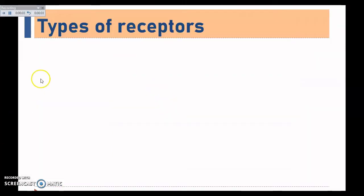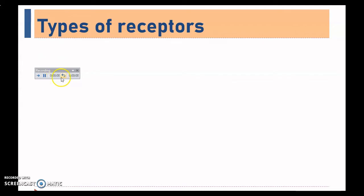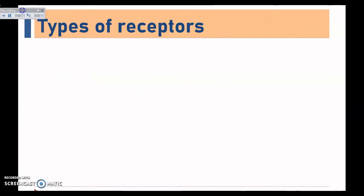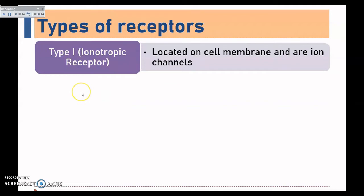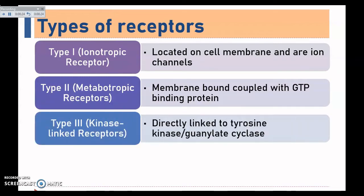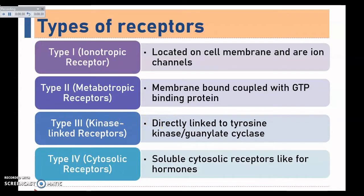As soon as you click Start Recording, a window appears at the top-left showing the recording time for the current slide and the total recording time for the whole presentation. Now I am recording: there are four types of receptors — Type 1 ionotropic receptors on the cell membrane, Type 2 metabotropic membrane-bound G-protein coupled receptors, Type 3 kinase-linked receptors directly linked to tyrosine kinase and adenylyl cyclase, and Type 4 cytosolic receptors like hormone receptors.